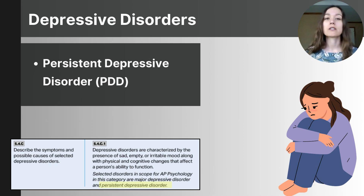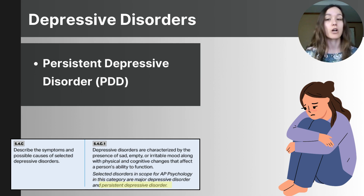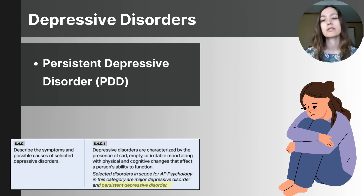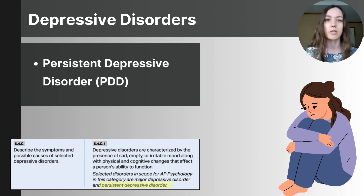Persistent depressive disorder is linked to biological, psychological, and social factors. Higher risk comes with a family history of depression. There is also believed to be a connection to imbalances in neurotransmitters like serotonin and dopamine. Those who experience chronic stress or trauma are at increased risk, and negative thinking patterns can also reinforce symptoms. Just like major depression, persistent depressive disorder is treatable with medications, lifestyle changes, and therapy.